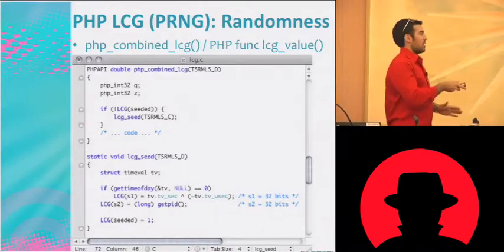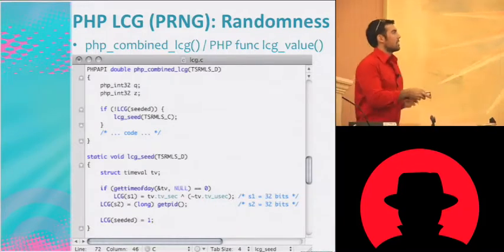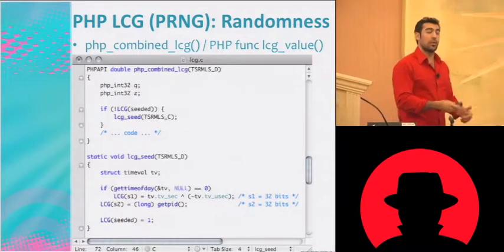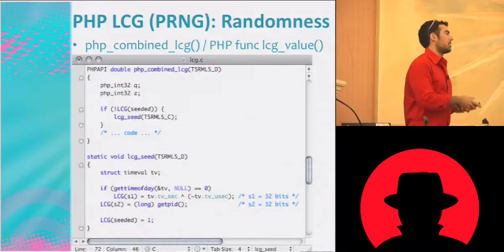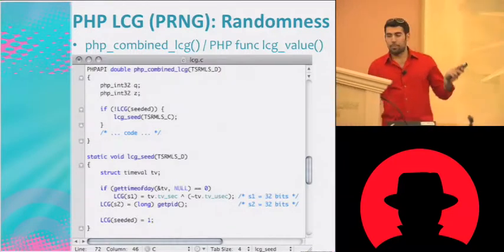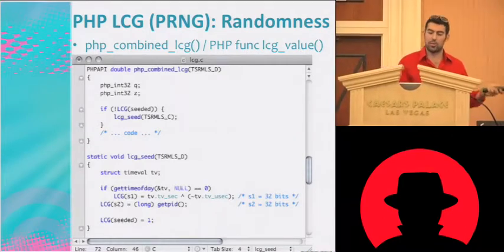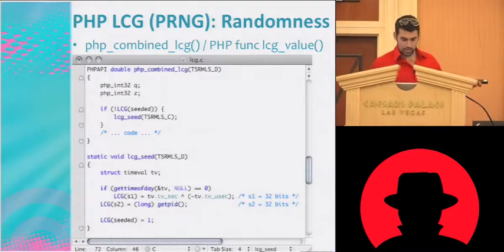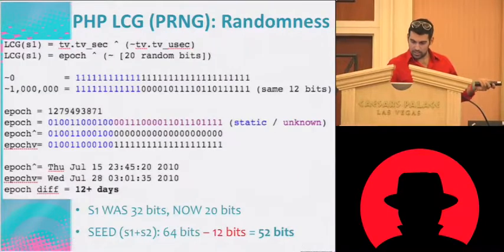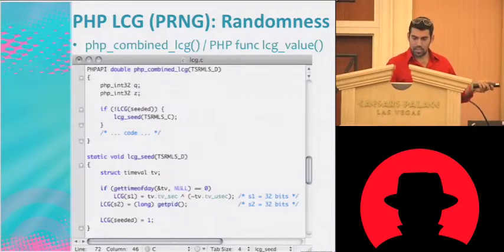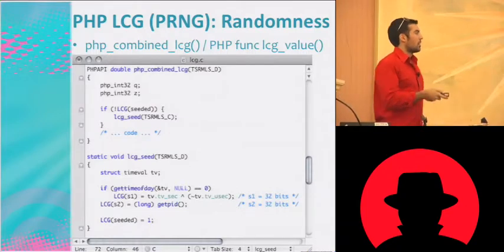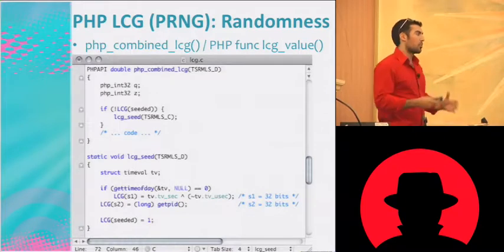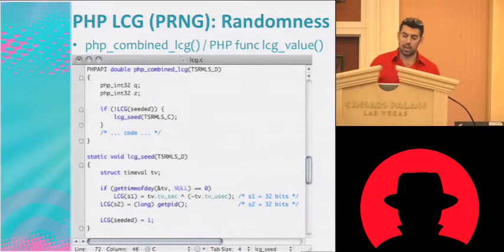It's like the matrix, basically. So if we take a look at the seed — basically when we call this LCG value function, it first seeds if it hasn't seeded already; you typically only ever seed once. Then we get a random number. The seed is 64 bits with two values: S1 and S2, both 32 bits. We do a gettimeofday — basically when PHP or Apache starts up, we get the time of day, that's the epoch again. We take the seconds and XOR it with the ones complement of the microseconds, giving us 32 bits of entropy there. Then S2 is the process ID of PHP, the other 32-bit value.